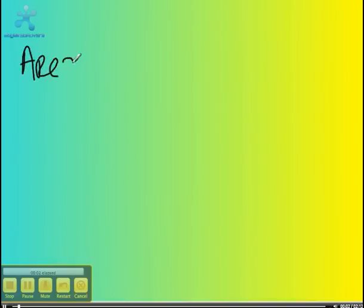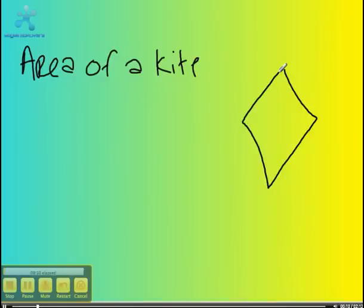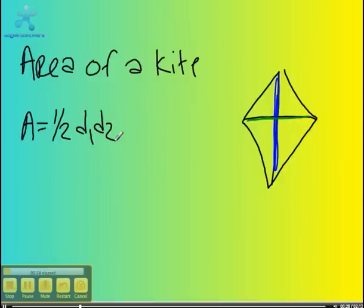Today we will be learning how to do the area of a kite. The area of a kite is one half times diagonal one times diagonal two. That is diagonal one and that is diagonal two. We abbreviate these as D1 and D2, so the area would be one half times D1 times D2.